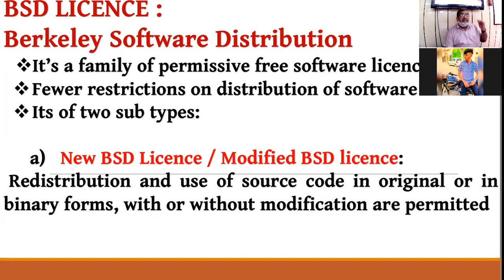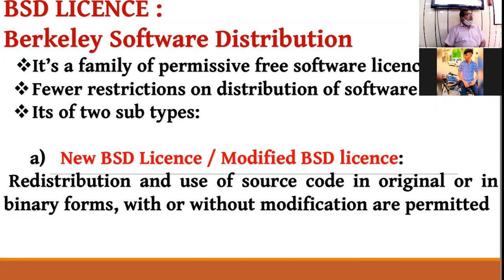BSD license is of two types: New BSD license and Modified BSD license. In open source, you get the source code, and that source code can be available in two ways — either as original source code as-is, or in binary form. When you get the source code in binary form, you get an encrypted copy which you have to convert back to original. Some conditions apply depending on which form you receive.